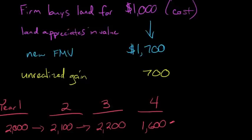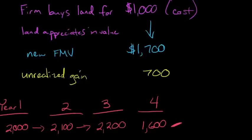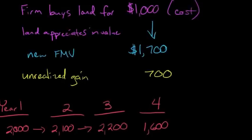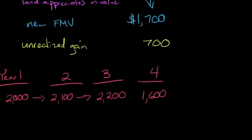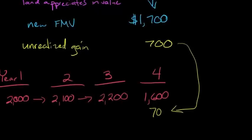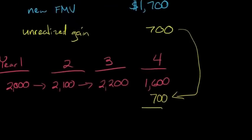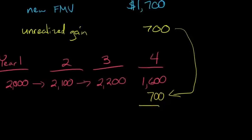Before the firm reports this, they're putting together their financial statements and realize they're just going to be at $1,600 if they don't do something. What can the firm do to manage this number? They can just sell the land, because they have an unrealized gain of $700. If you sell that land, that unrealized gain becomes realized, and a realized gain goes to earnings. Now we have $2,300 as the earnings number for year four, whereas before it was $1,600. This is perfectly legal. The firm hasn't committed fraud.